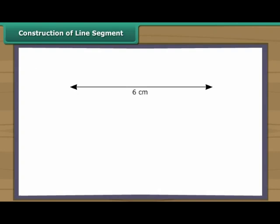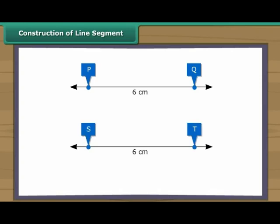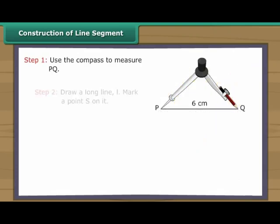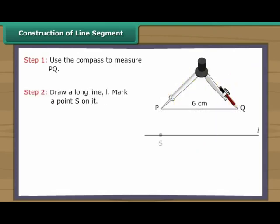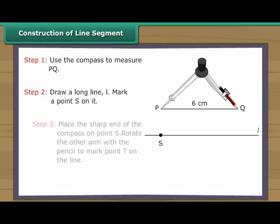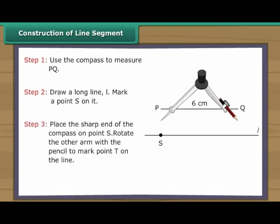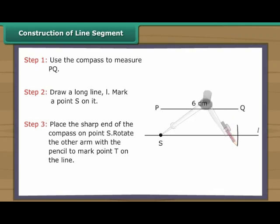Suppose a six centimetre long line segment PQ is given. We want to create another line segment ST of the same measurement. How do we do it without using a ruler? Use the compass to measure PQ. Draw a long line L. Mark a point S on it. Place the sharp end of the compass on point S. Rotate the other arm with the pencil to mark point T on the same line. We have a line segment ST which is a copy of the line segment PQ.